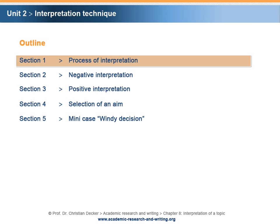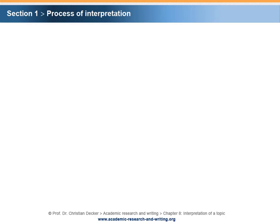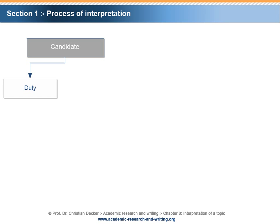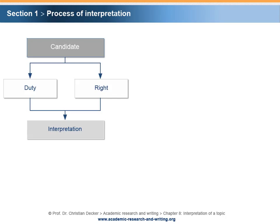Section 1 – Process of interpretation. Each topic or problem needs an interpretation that determines possible aims and thereby the nature of the research project. Each candidate has the duty but also the right to develop an interpretation of the topic. The technique of interpretation implies three process steps.